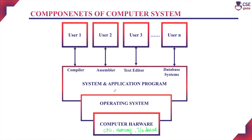Considering system and application programs: system programs are essentially the operating system programs — they run in kernel mode. The user cannot interact directly with these system programs; they run on the operating system side and are installed during OS installation. Examples of system programs include the compiler, assembler, and text editor.